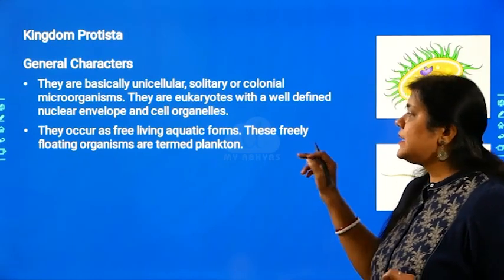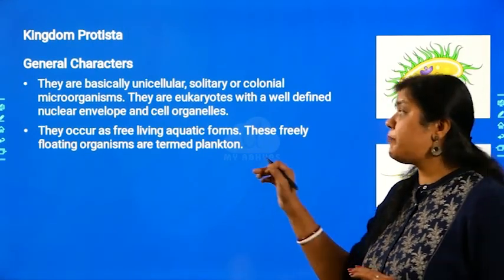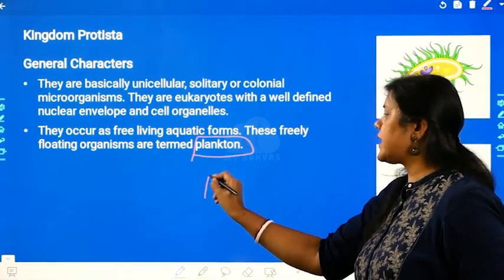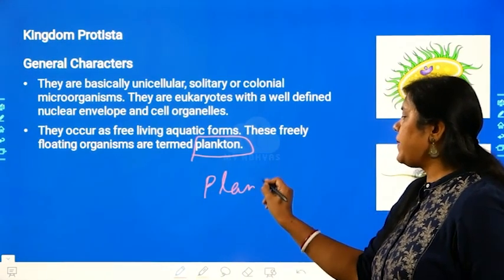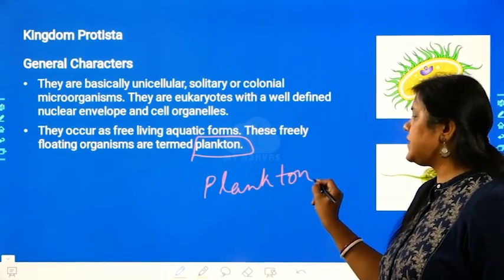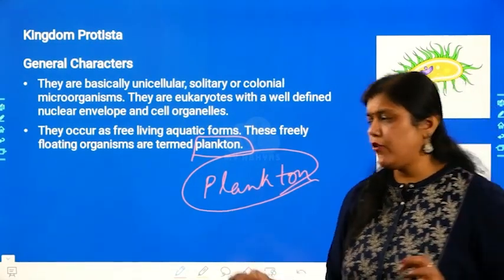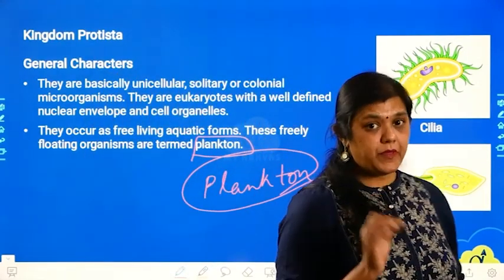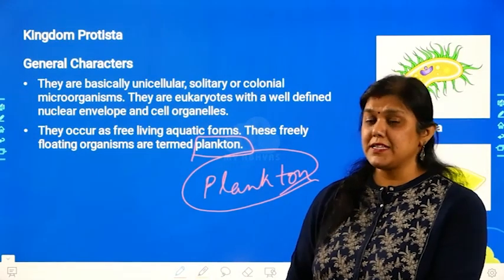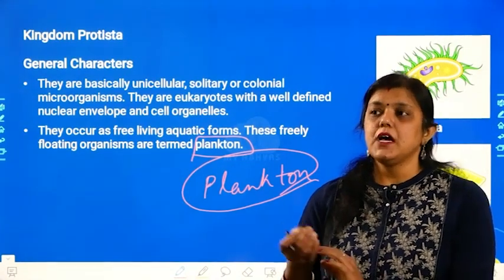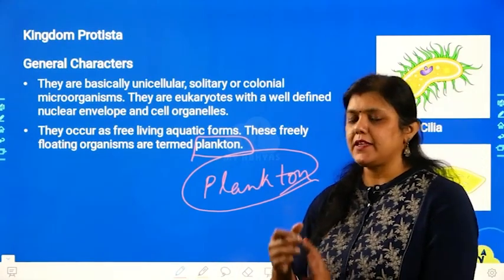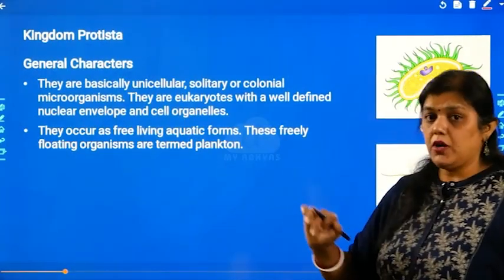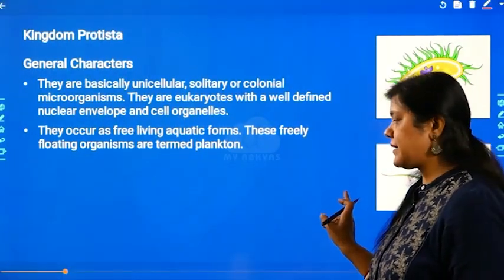These are floating organisms and we call them plankton. Plankton means they are floating on the water surface. They are very important because they are food for other bigger organisms like fishes and other water animals, which engulf and eat them. So these organisms are either free-living aquatic forms or freely floating, and they are called planktons.